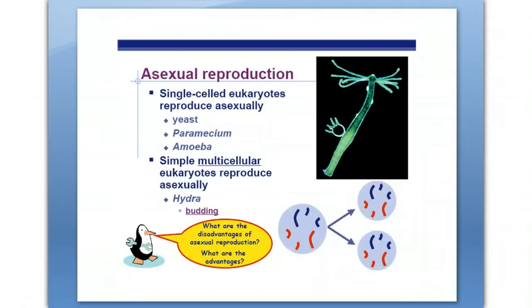Asexual reproduction — no male or female involved, but reproducing, making copies. Single-celled eukaryotes reproduce asexually. Things like yeast, paramecium, and amoeba will all divide in half during mitosis to produce extra copies of themselves. There is no male or female involved. Some simple multicellular eukaryotes can reproduce asexually as well. However, most living things that are multicellular reproduce with two sexes, sexually.